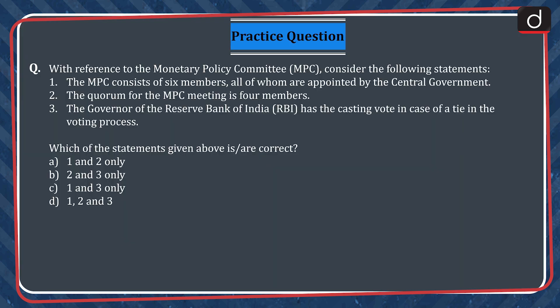Now let's look at a practice question. With reference to the Monetary Policy Committee, consider the following statements. 1. The MPC consists of six members, all of whom are appointed by the Central Government. 2. The quorum for the MPC meeting is four members. 3. The Governor of the Reserve Bank of India or RBI has the casting vote in case of a tie in the voting process. Which of the statements given above is or are correct?